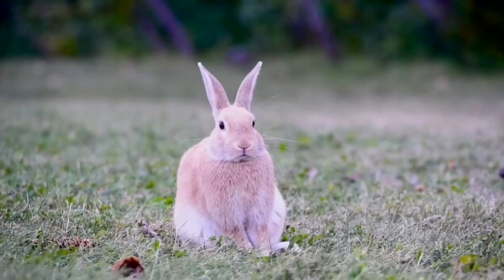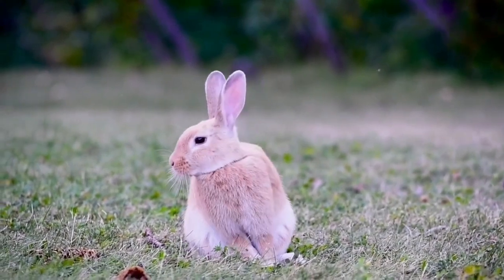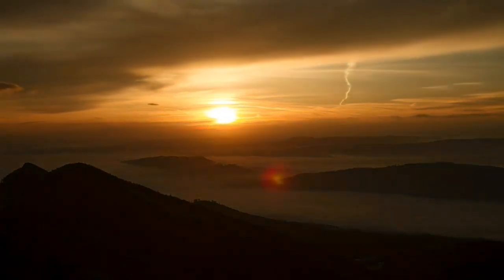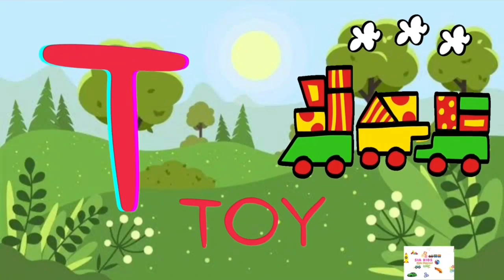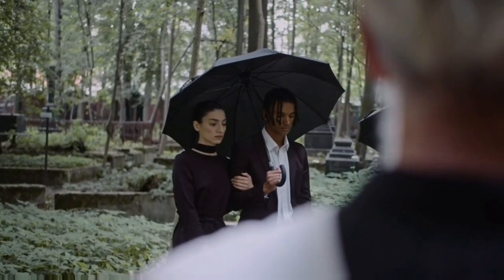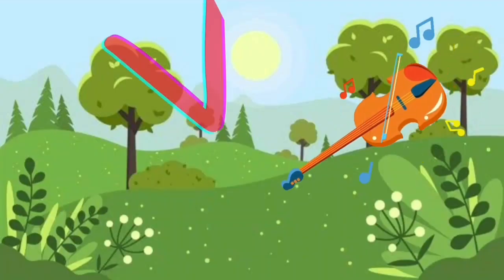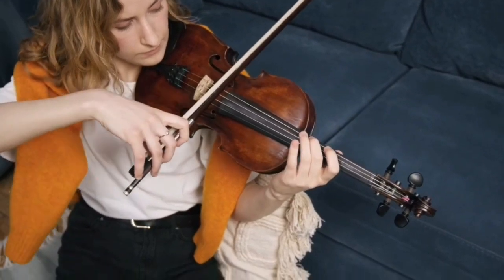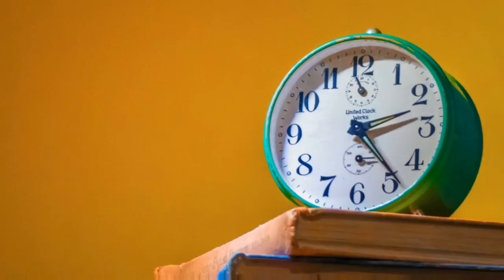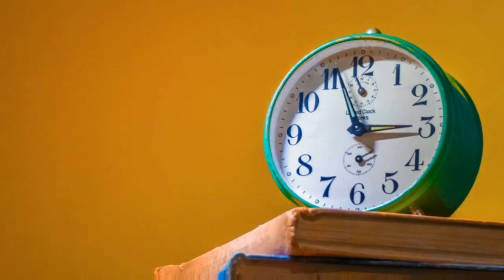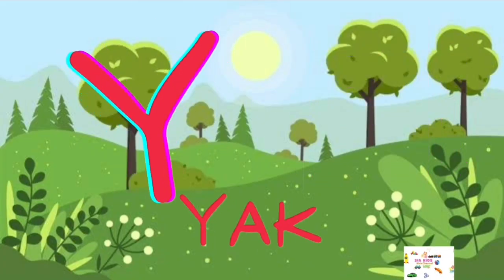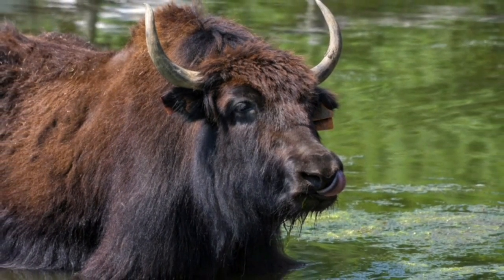R for Rabbit, S for Sun, T for Toy, U for Umbrella, W for Watch, X for Accessory, Y for Vac, Z for Zebra.